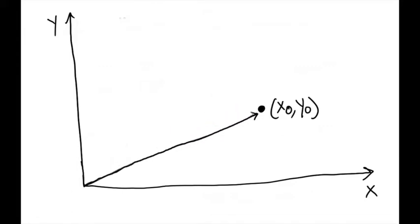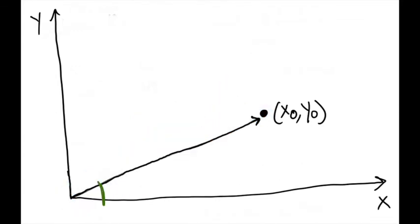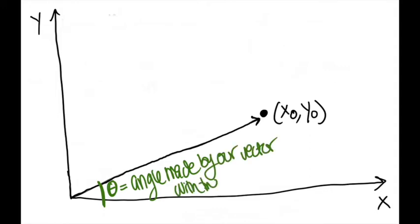If you remember from my previous video about solving equations of complex numbers in polar form, we can denote this line here as r, which represents the distance from our origin, or the length of this vector x0 and y0, with our vector containing theta, which is the angle made by our vector with the x axis.